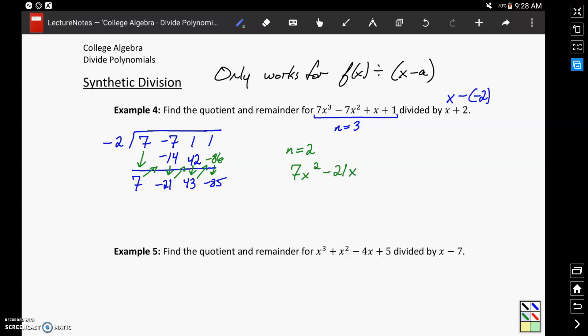minus 21x plus 43. And then whatever value we have left over at the end there, in that bottom right corner, will be our remainder.